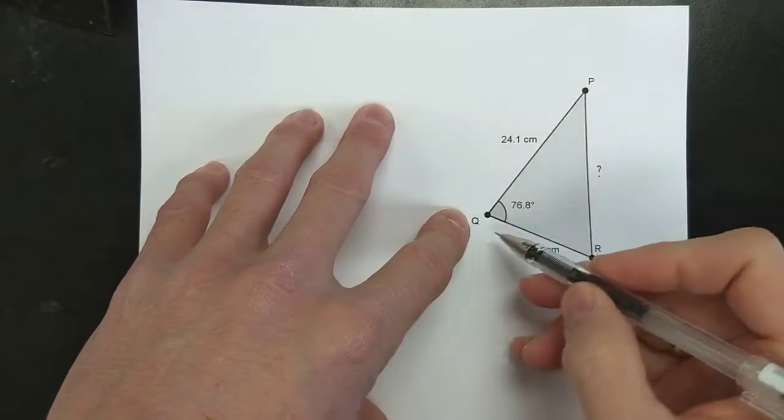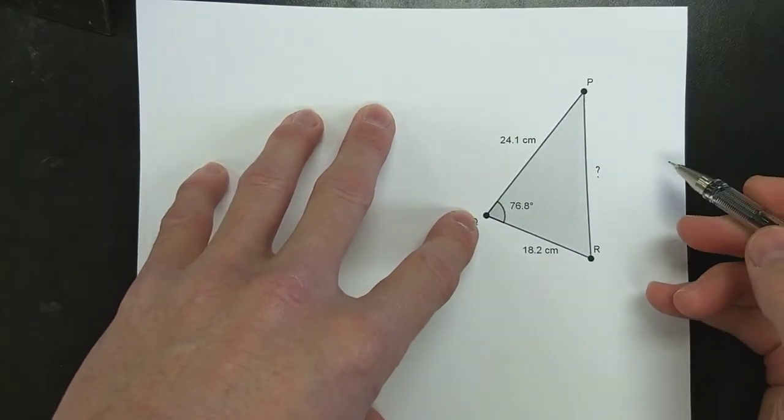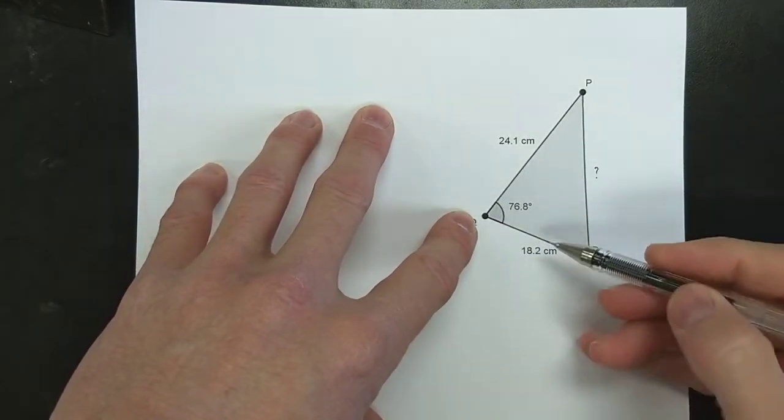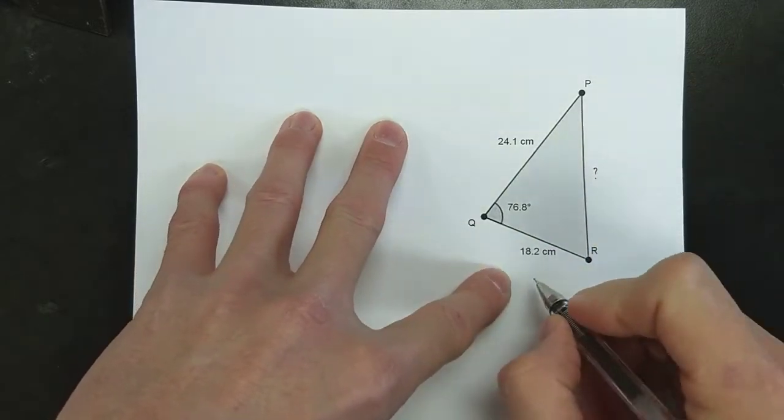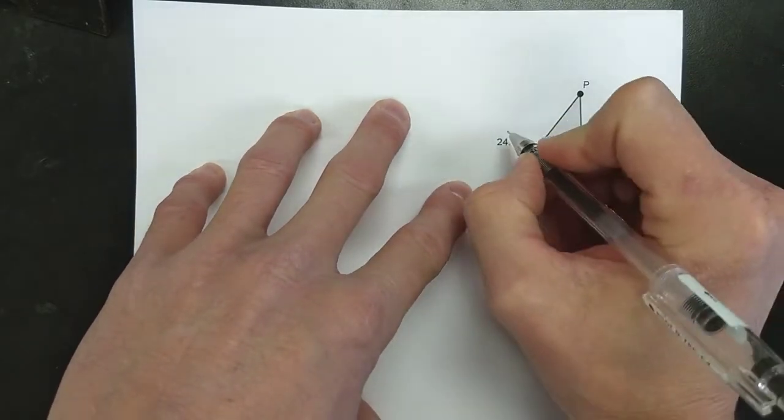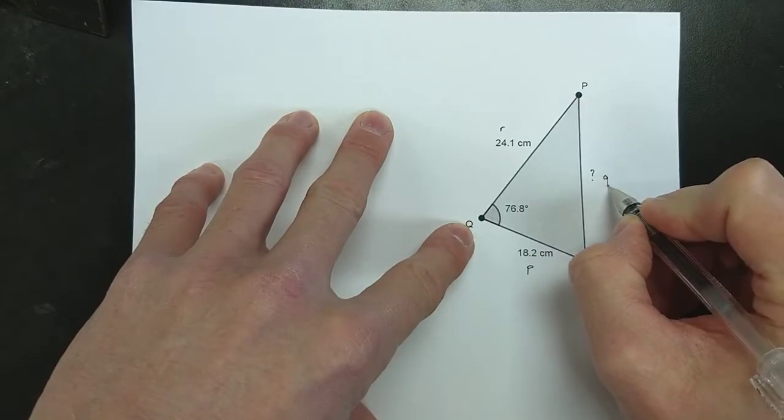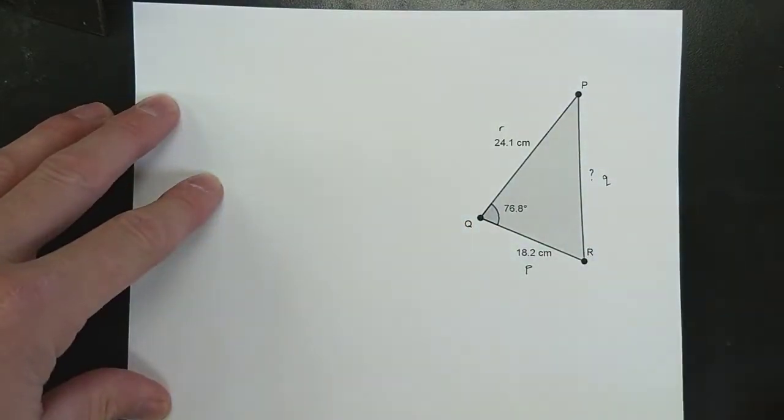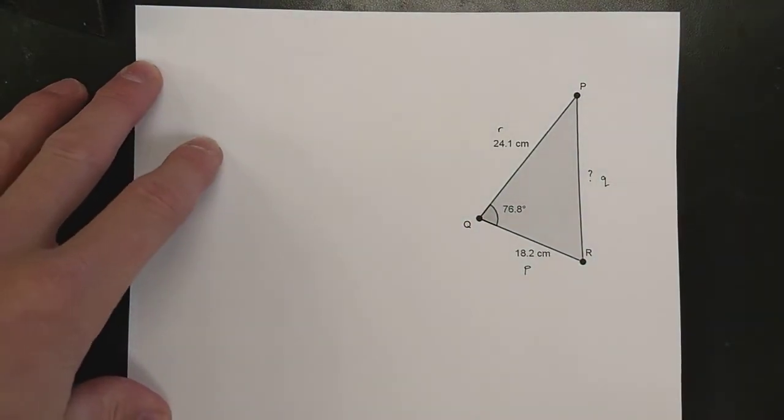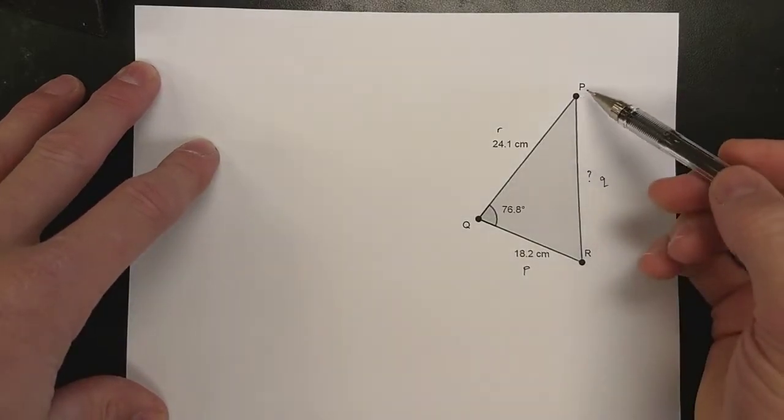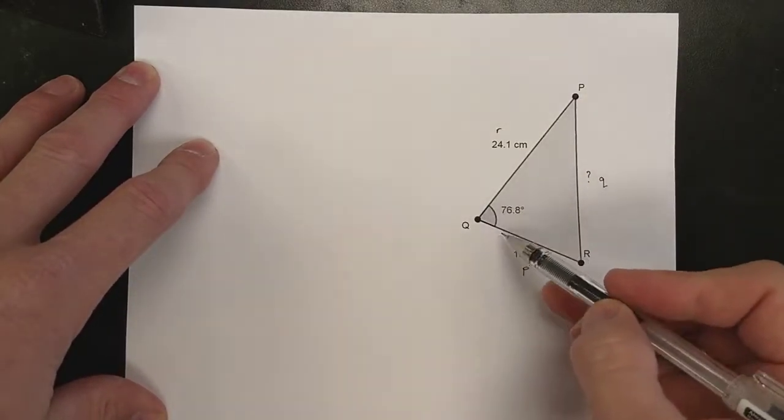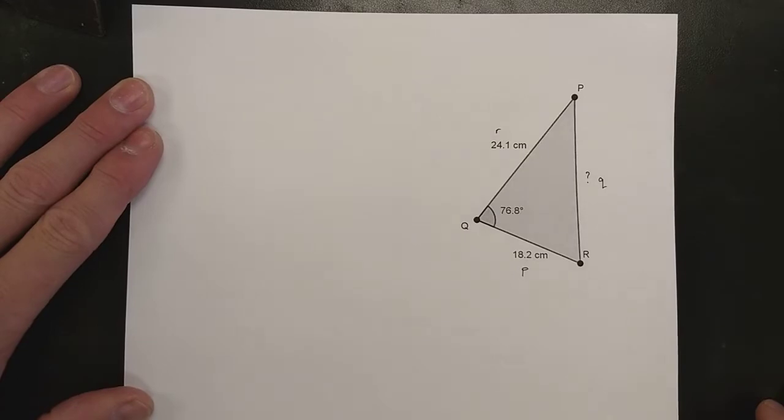Reminder: we name sides according to the angle or vertex they're across from. So this is small p, this is small r, and this is small q. We're finding q, and we need to use cosine law because we have two sides and the angle in between them, the contained angle.